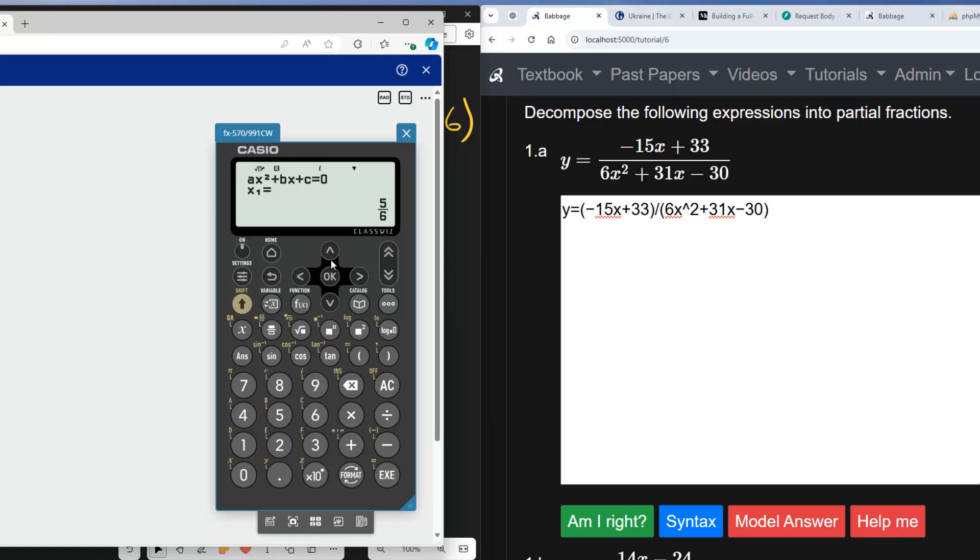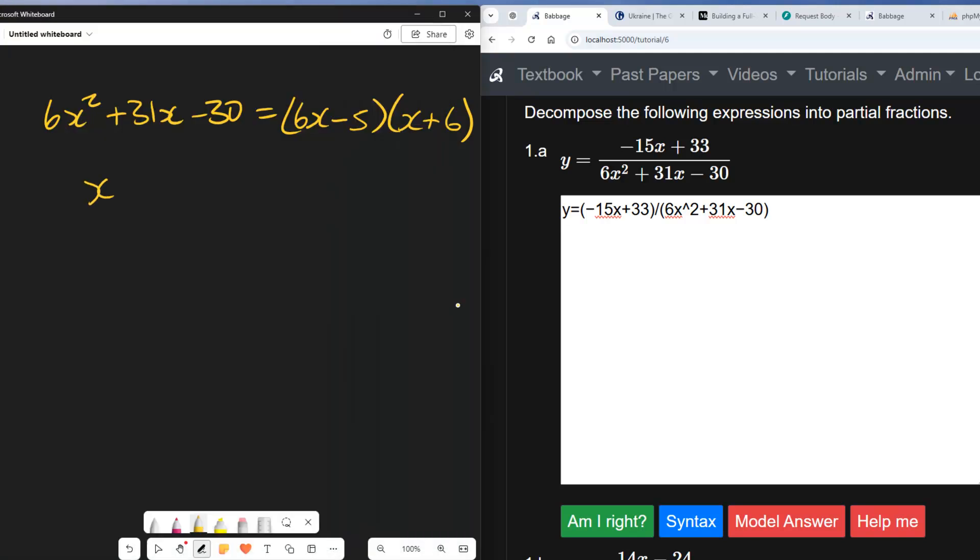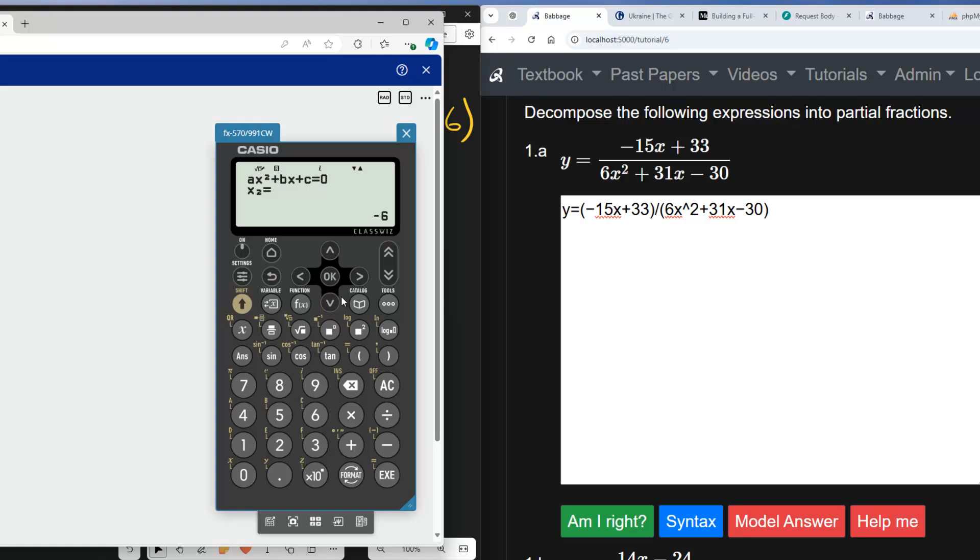And there's our first root. So x₁ is equal to 5/6, and x₂ is equal to -6.